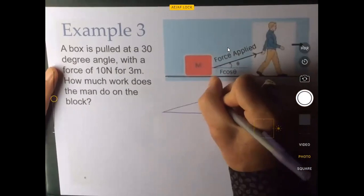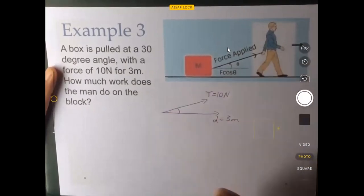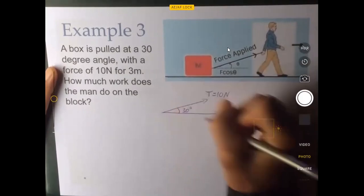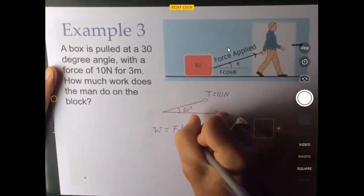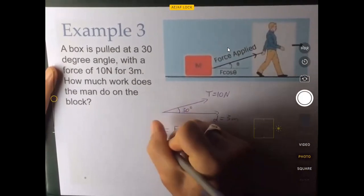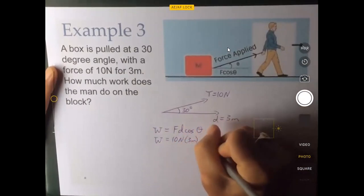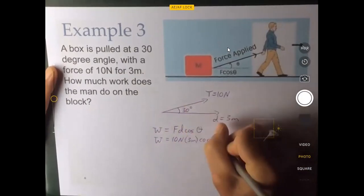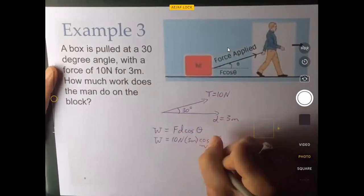So the force here, the tension is 10 newtons. And then the angle here is 30 degrees. Same equation. Work equals FD cosine theta. Work equals 10 newtons times three meters times the cosine of the angle between those.